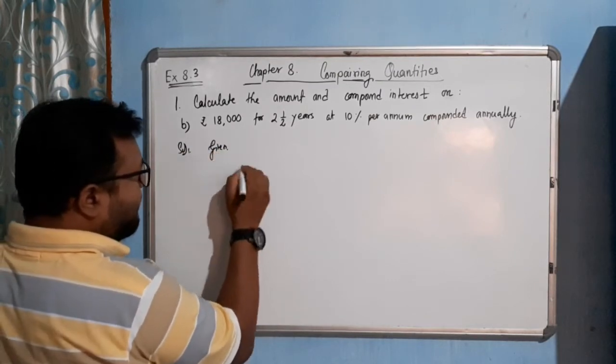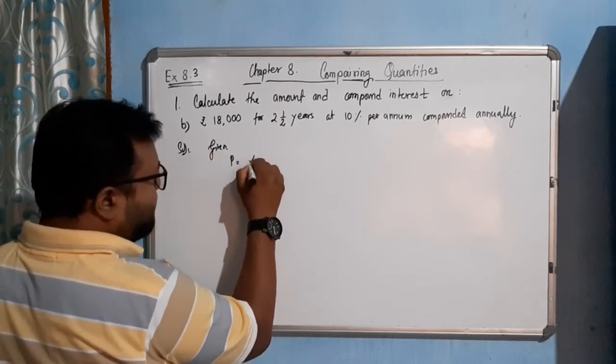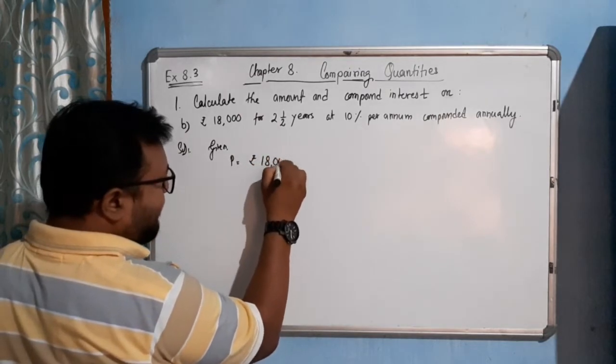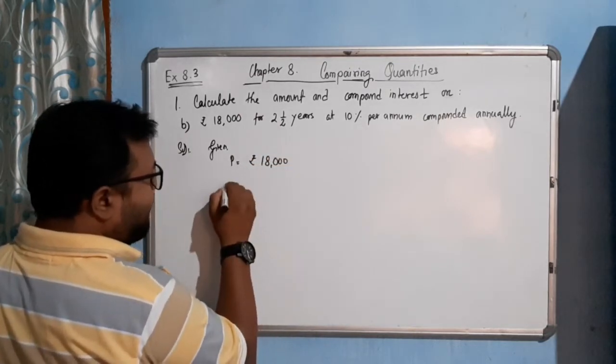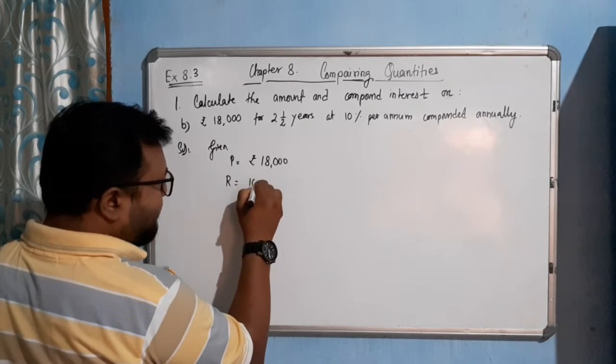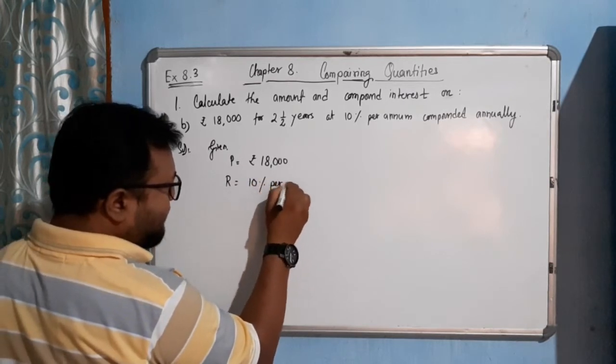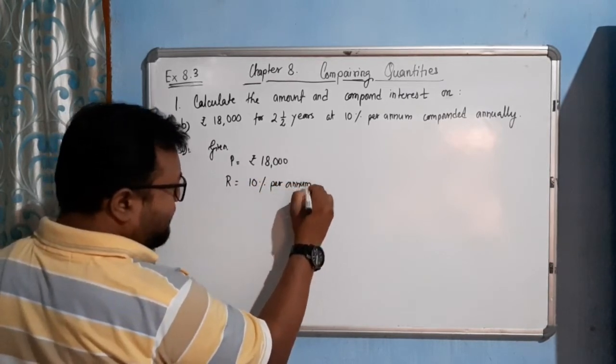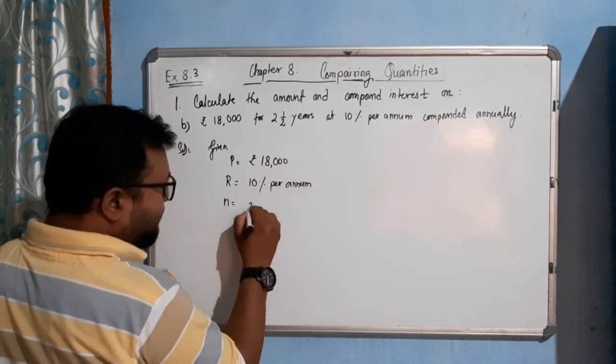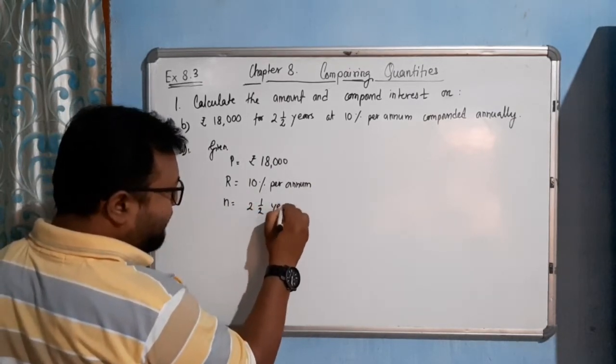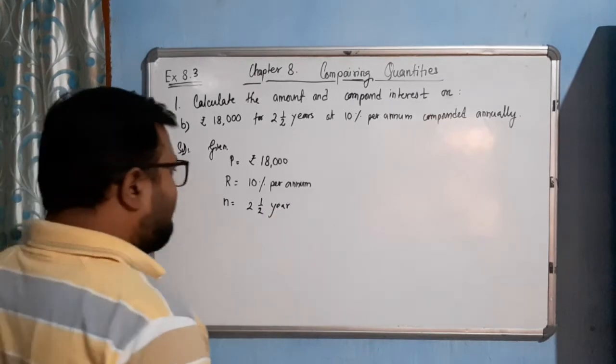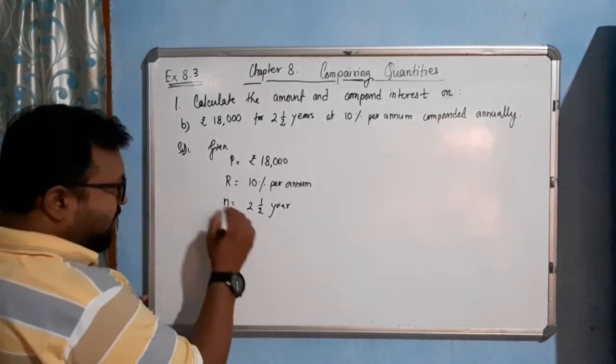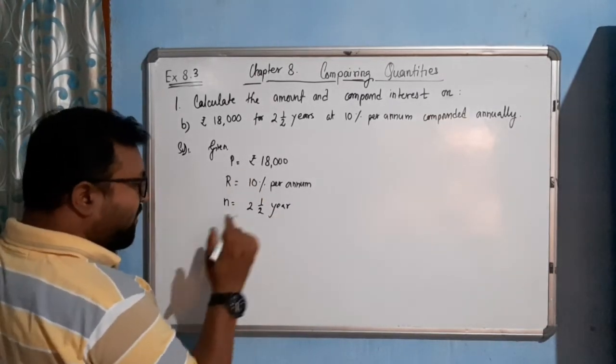Given: P equals how much? ₹18,000. Rate of interest equals how much? 10% per annum. And n equals how much? Two and a half years.